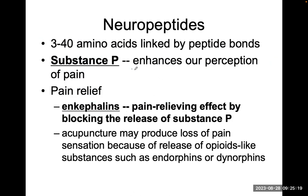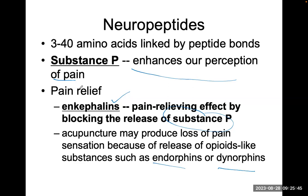Substance P enhances our pain perception, and enkephalins have a pain-relieving effect by blocking the release of substance P. Acupuncture may produce a loss of pain sensation because of the release of opioid-like substances such as endorphins and dynorphins. We're always looking for drug-free ways of trying to help people, and acupuncture has made a lot of strides in the last few years.